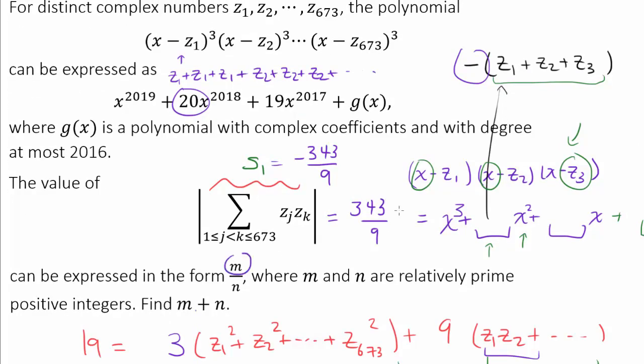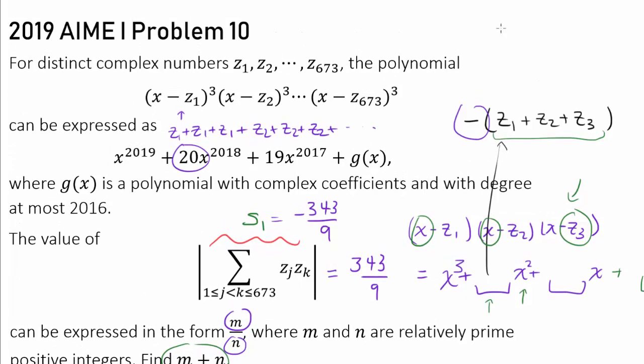Hence, m is 343, n is 9. So m plus n is going to be 352. And we are done.